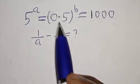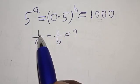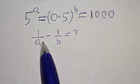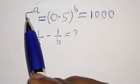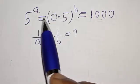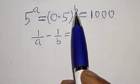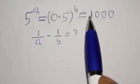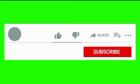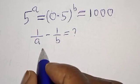Hi everyone, welcome to my class. In this class, we want to find the value of 1 over a minus 1 over b from the given equation: 5 raised to power a is equal to 0.5 raised to power b is equal to 1000. But before we proceed, please don't forget to like, share, comment, and subscribe. Thank you.